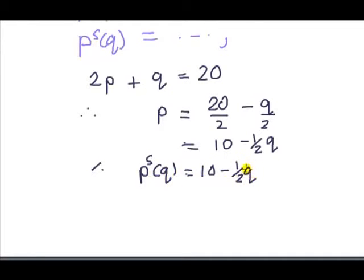Well, this inverse supply is OK for all values of Q so long as the price is bigger than or equal to zero. So in other words, we must have the right hand side, this whole thing, bigger than or equal to zero. And then rearranging it, you can find that Q must be less than or equal to 20.